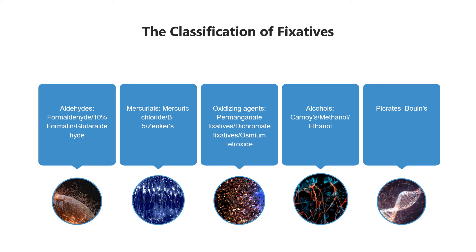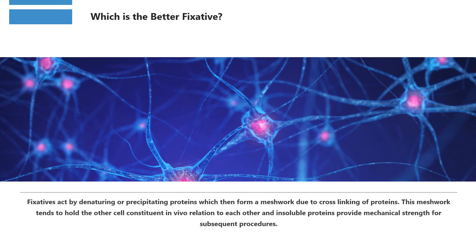Five: Picrates — picrates include fixatives with picric acid. They react with histones and basic proteins to form crystalline picrates with amino acids. This is a very good preservative for glycogen. Fixatives act by denaturing or precipitating proteins, which then form a meshwork due to cross-linking. This meshwork tends to hold the other cell constituents in vivo relation to each other, and insoluble proteins provide mechanical strength for subsequent procedures.